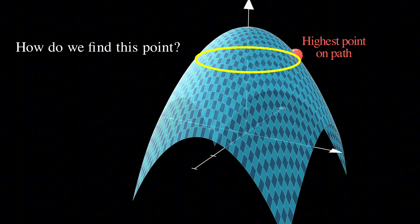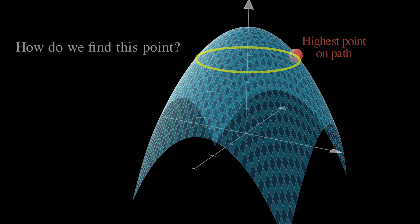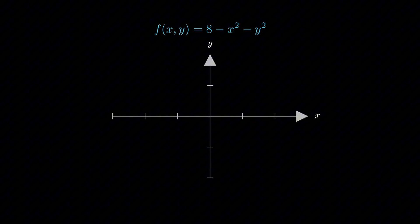Let's transition from our three-dimensional mountain view, down to a cleaner two-dimensional perspective, where we can really see what's happening. Here we have our function f of x comma y equals 8 minus x squared minus y squared plotted on standard xy axis.